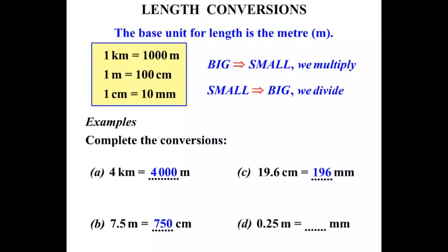0.25 meters equals how many millimeters? We might do this in two steps. One meter equals 100 centimeters, and one centimeter equals 10 millimeters. Starting from meters, let's first change it to centimeters by multiplying by 100. And 0.25 times 100 is 25, so we've got 25 centimeters.